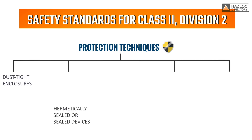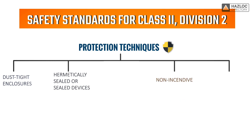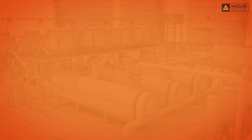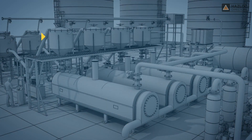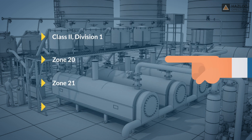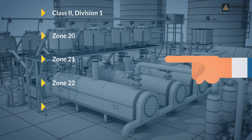The protection techniques include dust-tight enclosures, hermetically sealed or sealed devices, non-incentive, and purging and pressurization type Z. Also, equipment that is suitable for use in Class 2 Division 1 and Zone 20, 21, or 22 in North America is permitted to be installed in a Class 2 Division 2 area.